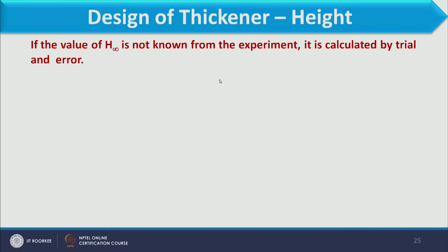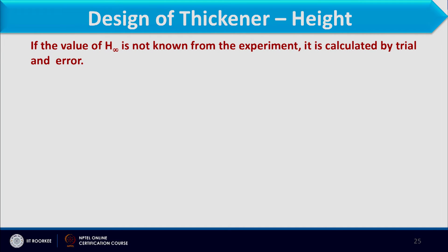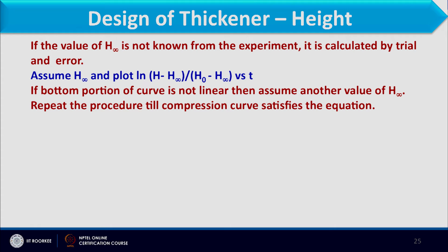If the value of H∞ is not known from experiment, it can be calculated by trial and error. Usually H∞ is found through a batch sedimentation test, but if unavailable, we assume a value of H∞ and plot log[(H minus H∞)/(H0 minus H∞)] versus time. If the bottom portion of the curve is linear, the assumed H∞ is correct. Otherwise, a new value is taken until the tail of the semi-log graph becomes linear.